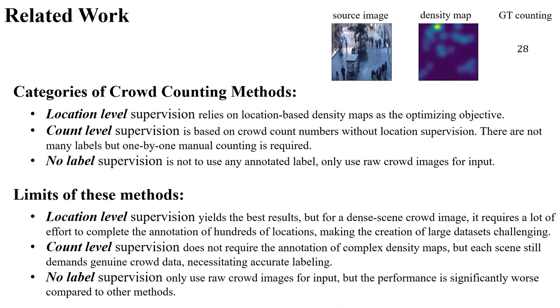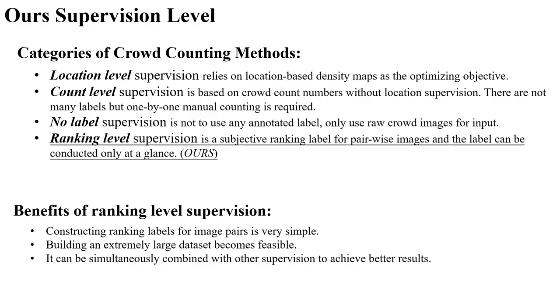Count level supervision is based on crowd count numbers, but each scene still demands genuine crowd data. No label supervision only uses raw crowd images for input, but the performance is significantly worse compared to other methods. And the supervised method we propose is based on ranking level, which is a subjective ranking label for pair-wise images, and the label can be conducted only at a glance.